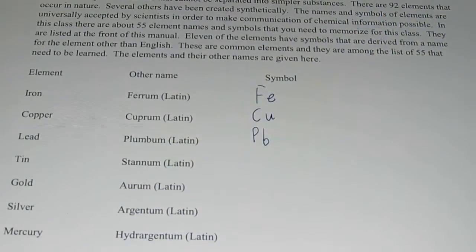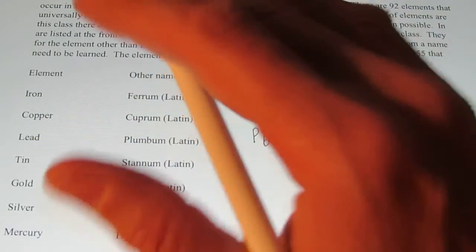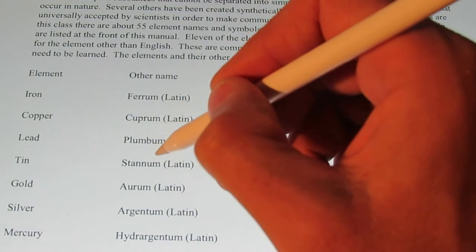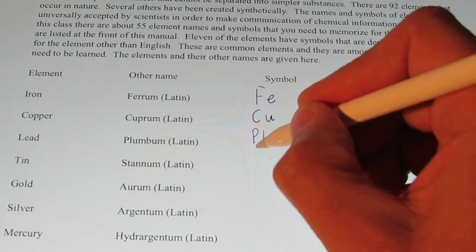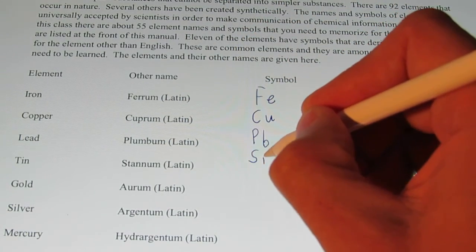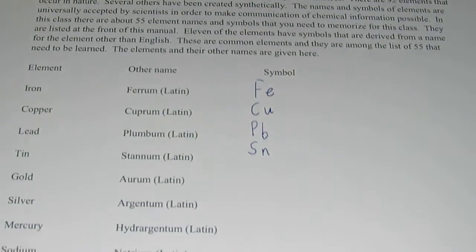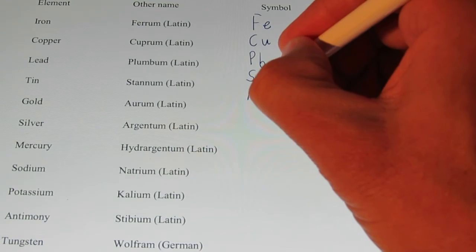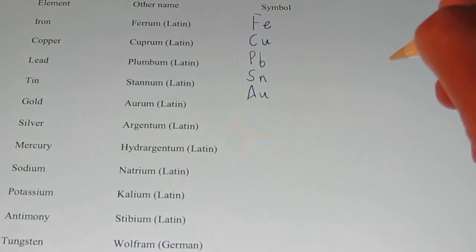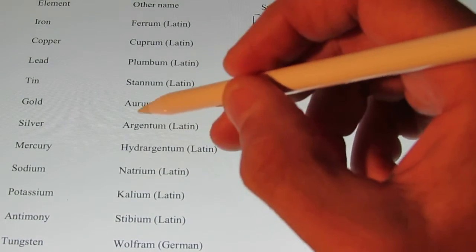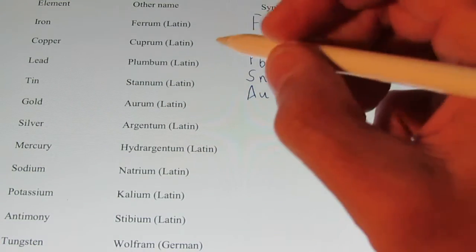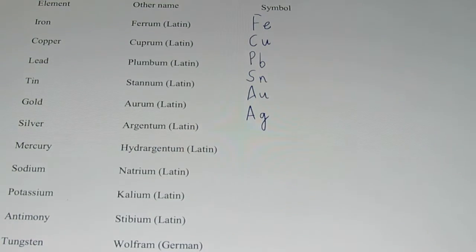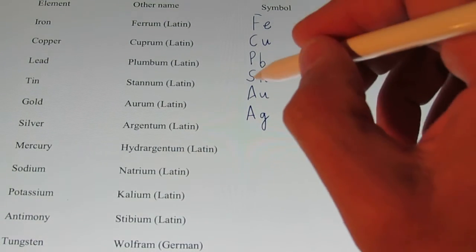Tin, a lot of kids want to call the symbol for tin T-I. Don't do that, that's titanium. The Latin name for tin is stanum, so the symbol for tin is actually S-N. Gold comes from the Latin name aurum, and its symbol is A-U. Not A-G. A-G is the symbol for silver. Silver's Latin name is argentum. Once again, that symbol is A-G. Not A-U. That's gold.